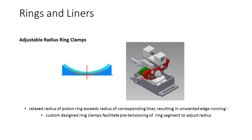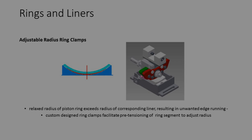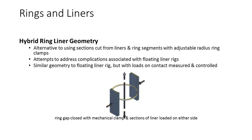Another issue with ring and liner samples in reciprocating tribometers is that the relaxed radius of the piston ring exceeds the radius of the corresponding liner, resulting in unwanted edge running. This issue can usually be addressed by using custom designed ring clamps that facilitate pre-tensioning of the ring segment to adjust the radius to match the liner section. An alternative is to use a complete ring with a ring gap closed with a mechanical clamp, with a section of liner loaded on either side of the ring, which is reciprocated. The result is a rig with similar geometry to a floating liner rig, but with the loads on the contact measured and controlled.